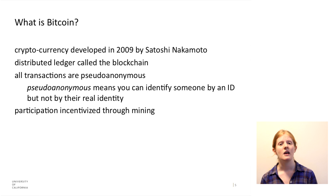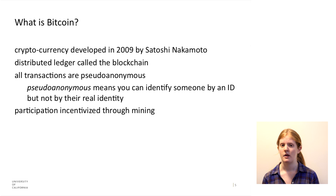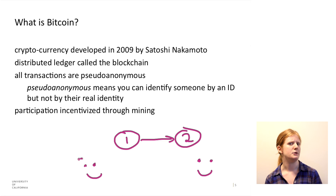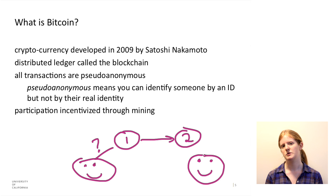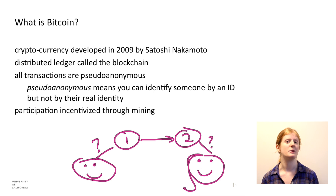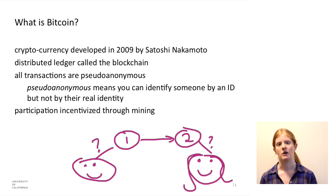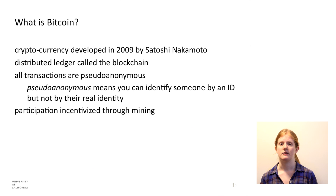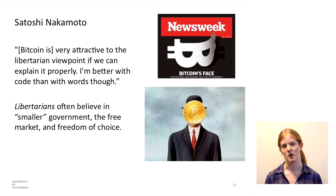Pseudo-anonymous means that you have some sort of identifying username or string of characters associated with you. With Bitcoin, there are addresses that you can use — people can send money to or you can send money from — that are associated with you but there's no identifying information. It's sort of like how you might use a Reddit account and probably wouldn't use your real name, so people can see all these posts were made by you but they don't know who you actually are. So Bitcoin is pseudo-anonymous and all the transactions you make are part of a public ledger called the blockchain — it's all public but nobody knows exactly who made those transactions. Participation in this system is incentivized by mining, which I'll talk about more in a few minutes.